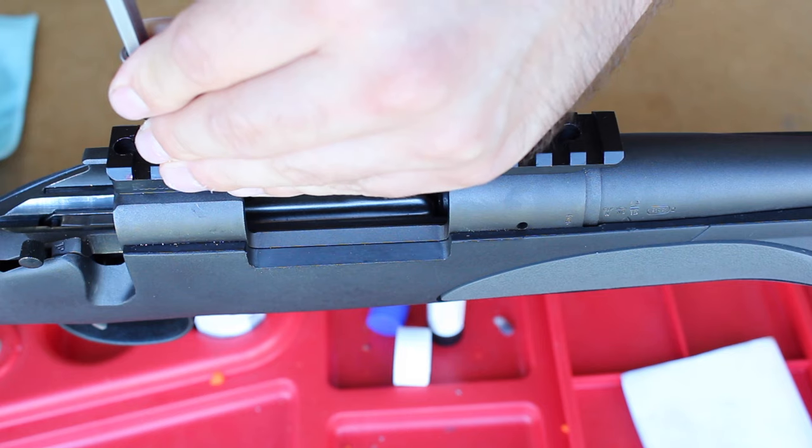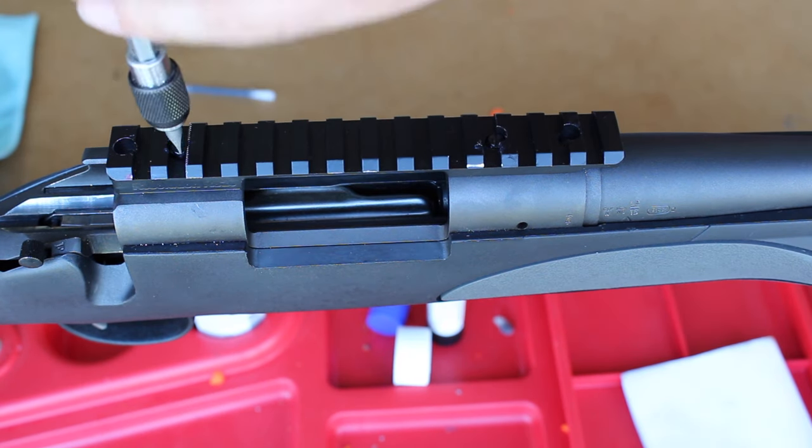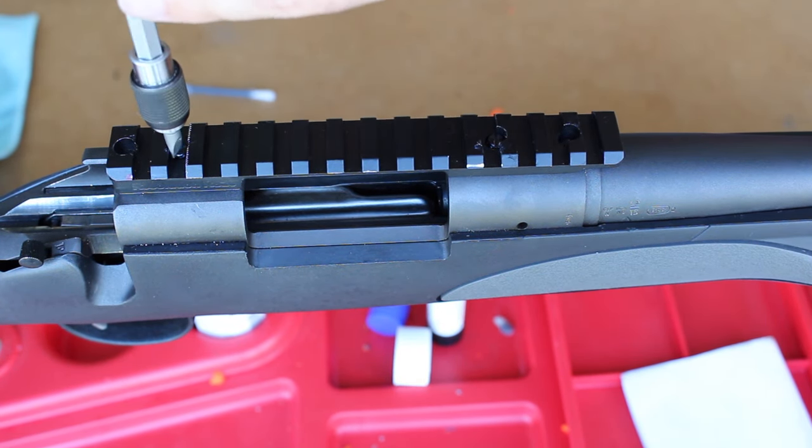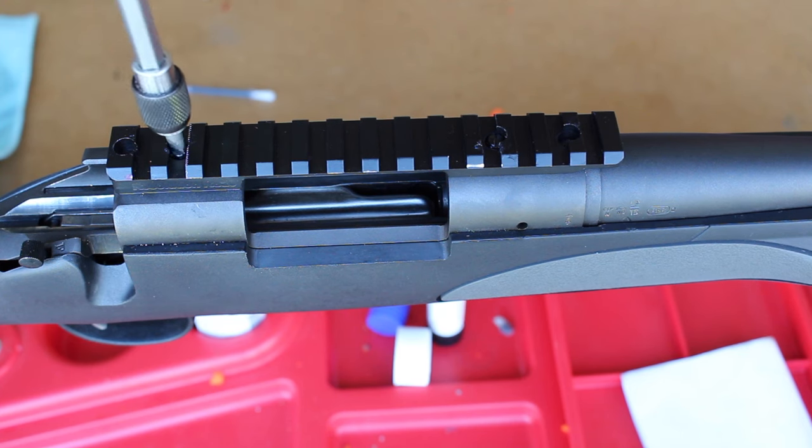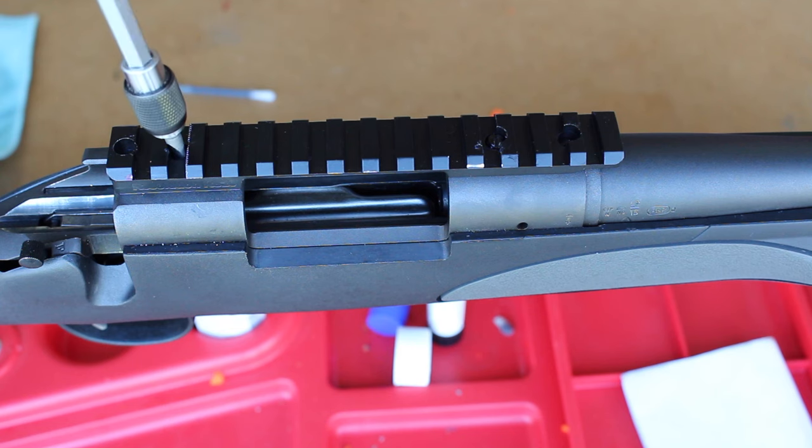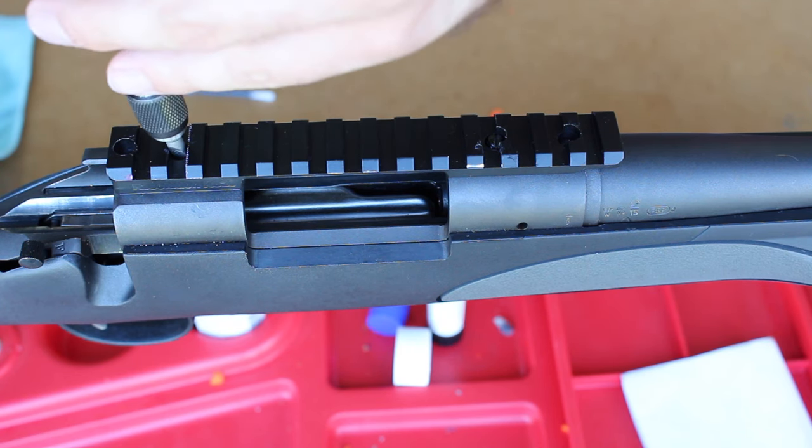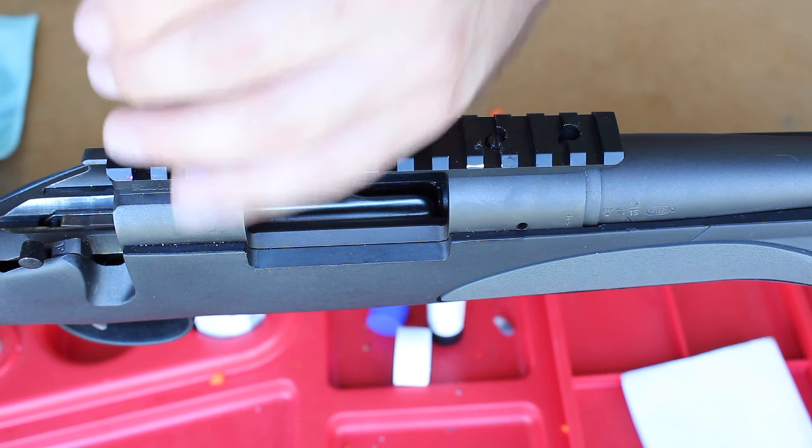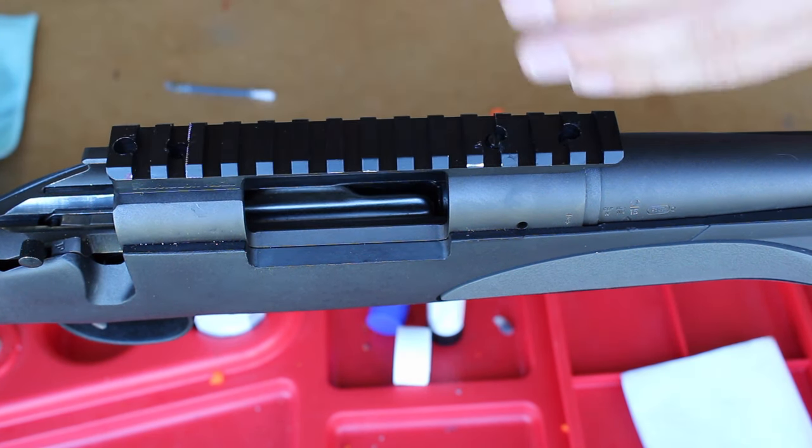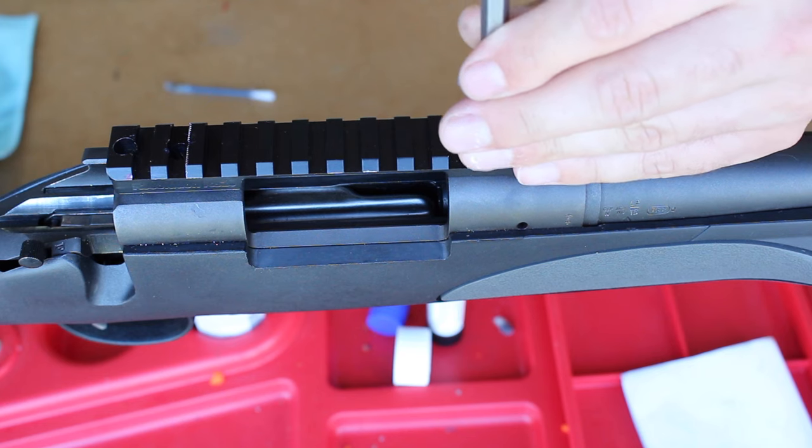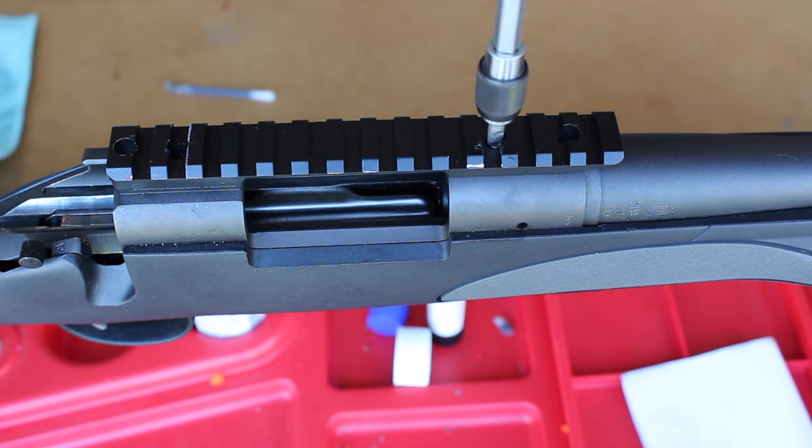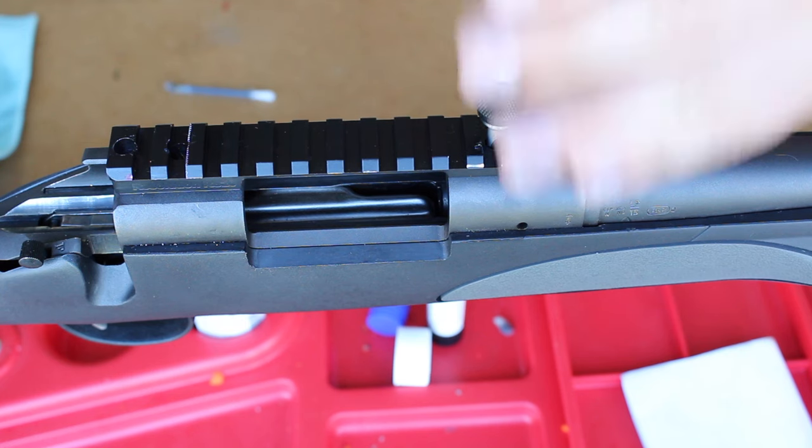So you just want to take it nice and easy. Obviously they need to be done up tight, it needs to be secured but if you're doing it by hand just don't over tighten it. The torque wrench isn't about getting the maximum force on there and making sure it's done up effectively to a certain amount, it's more to actually protect the screws and the threads within the action. Obviously it is to make sure it's done at least to a certain standard but it's there to make sure you don't over tighten them.